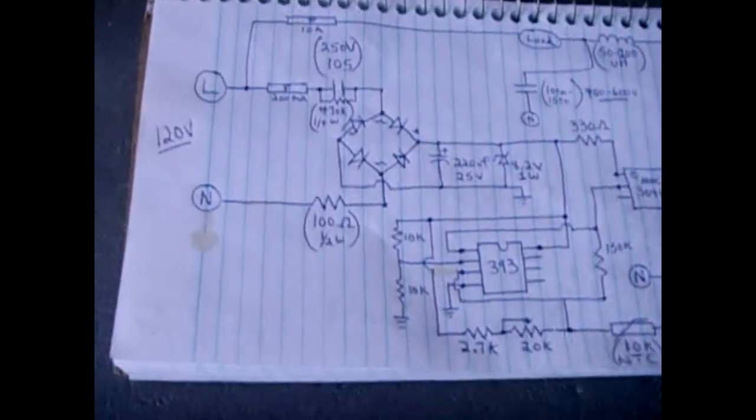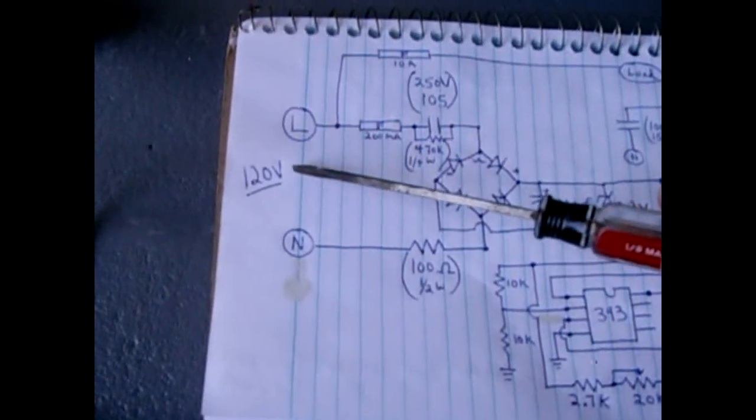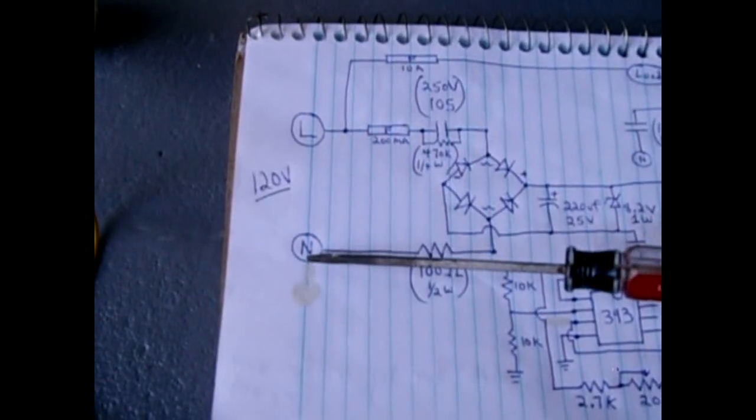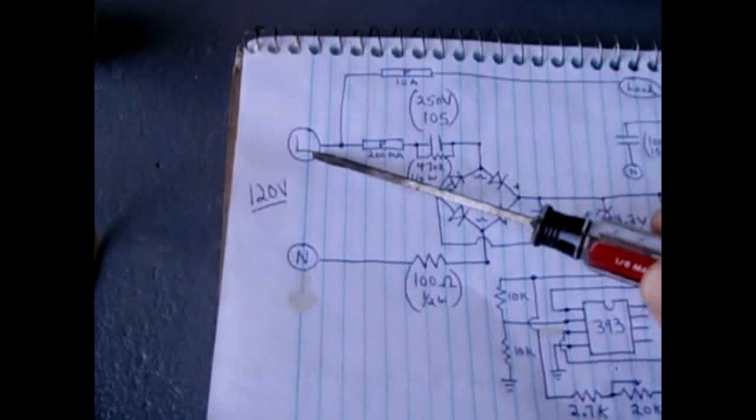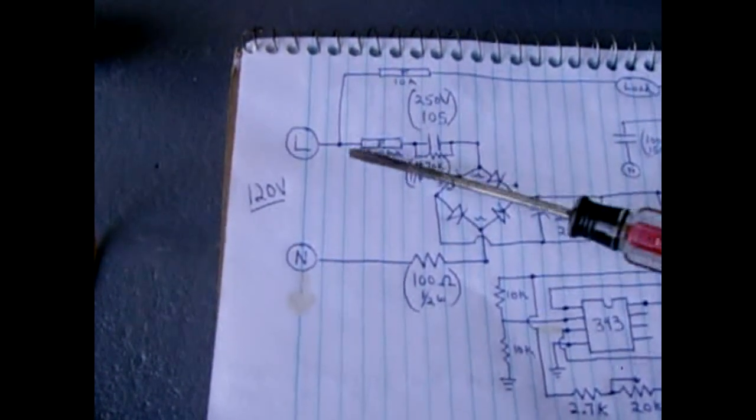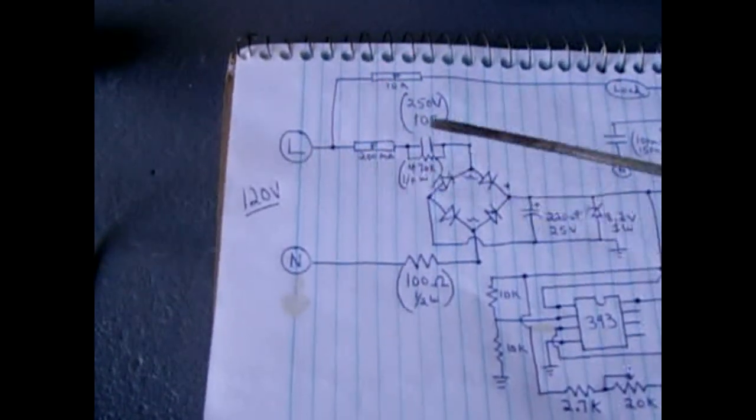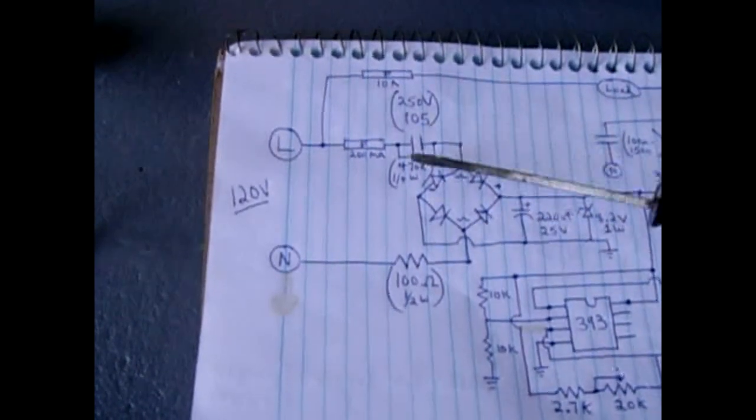The first thing I'm going to do is go over the whole schematic. Here you have your 120 volt hotline coming in and your neutral. Off of the hotline you have two fuses: one is a 200 milliamp fuse and a 10 amp fuse.